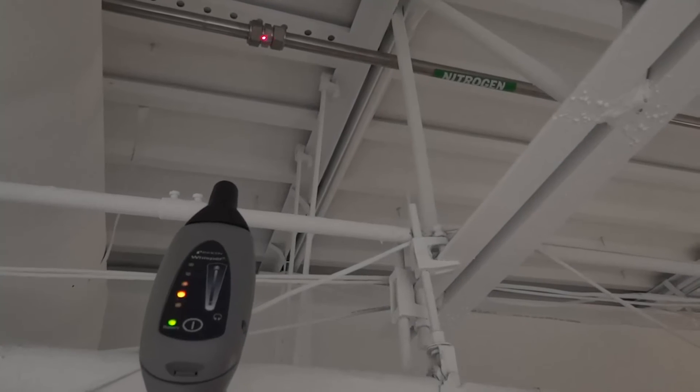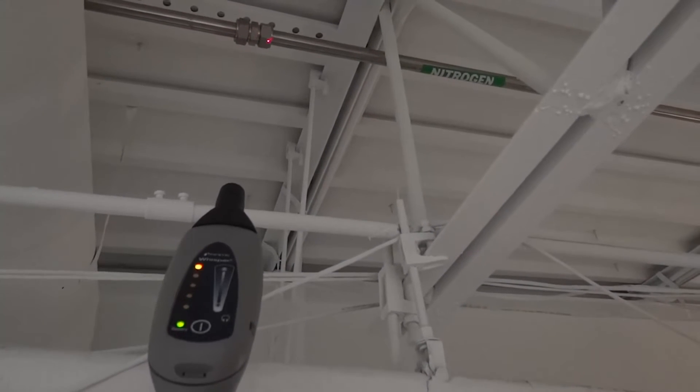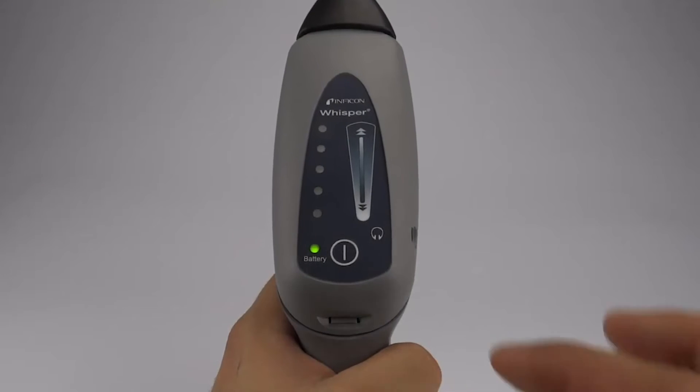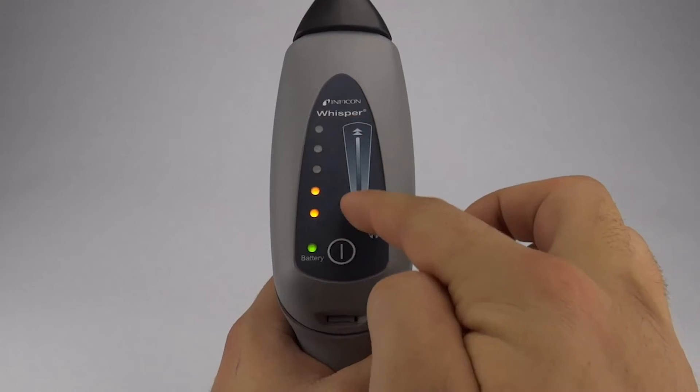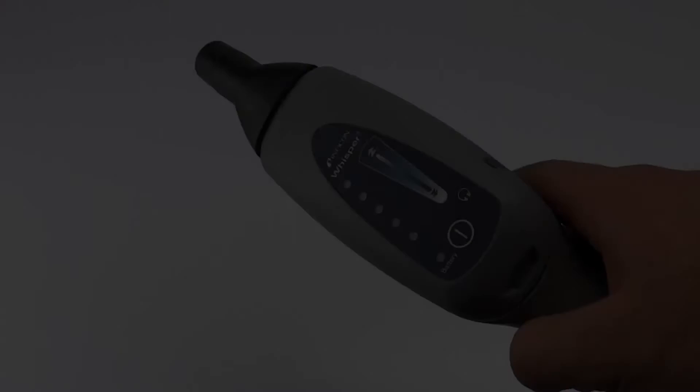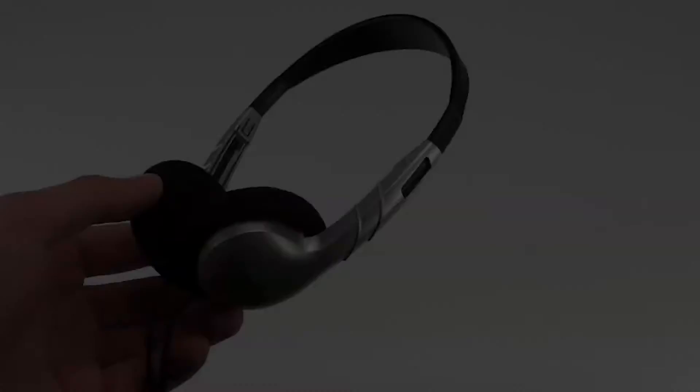To detect a leak, slowly sweep across the suspected leak area. Whisper will alarm when a leak is detected. Swipe up or down on the touchpad to adjust sensitivity. We recommend using the supplied headphones for finding leaks.